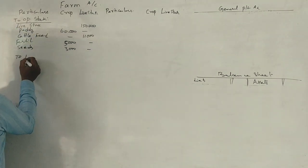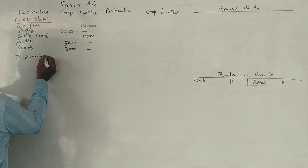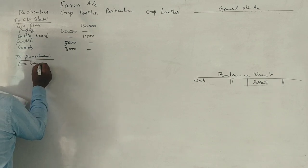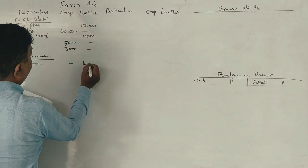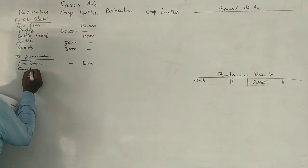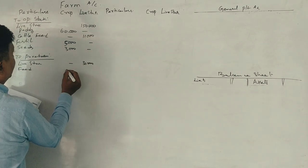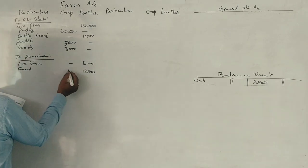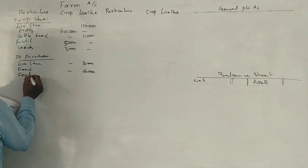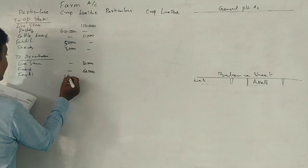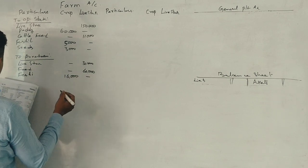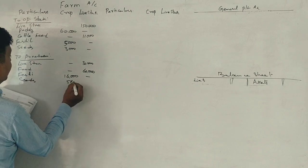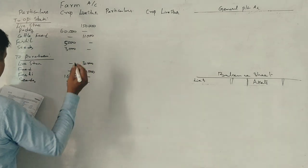Next, purchases. Livestock: 30,000. Cattle feed: 60,000. Fertilizer: 16,000. Seeds: 5,000.